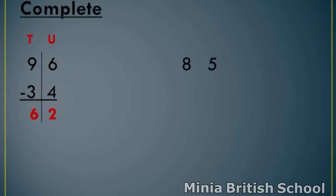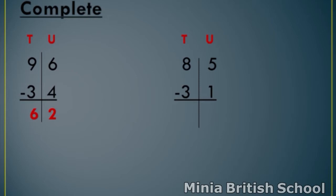Another example. Read this number: 85 minus 31. The first step: write T and U. The second step: make a line. The third step: start from units. Where is the smallest number? One. So, you count after one to number five. Close your fingers. After one: two, three, four, five. How many fingers? Four. So, write four under units.